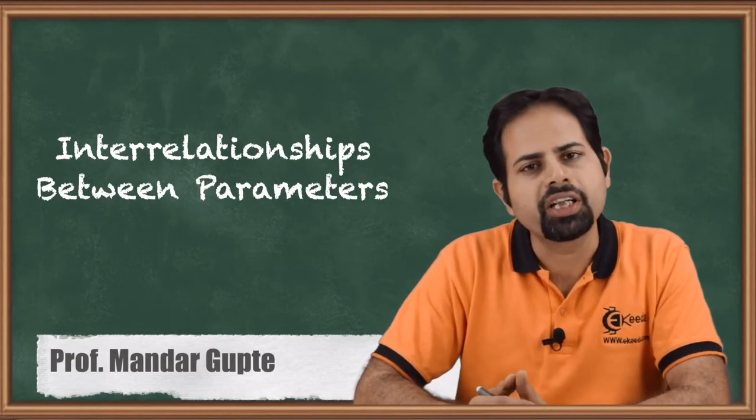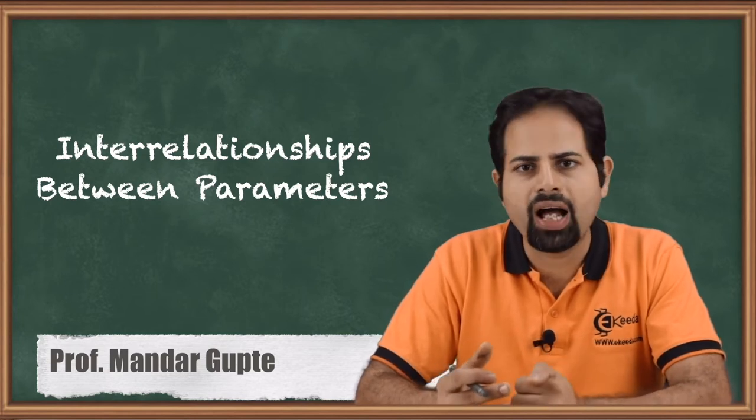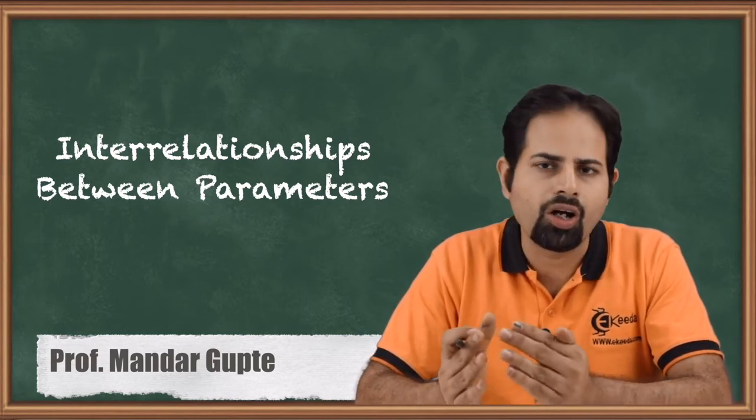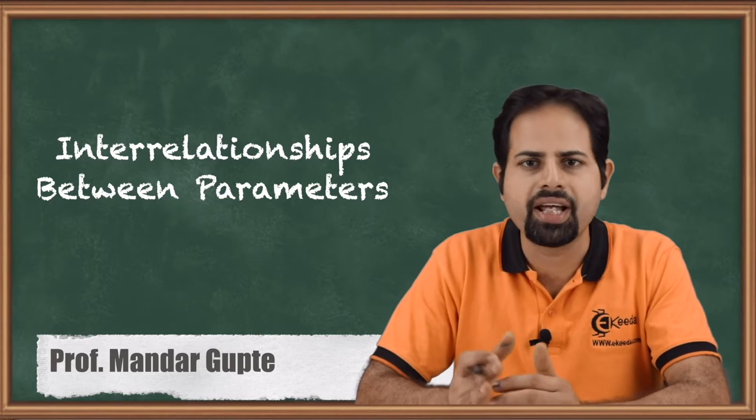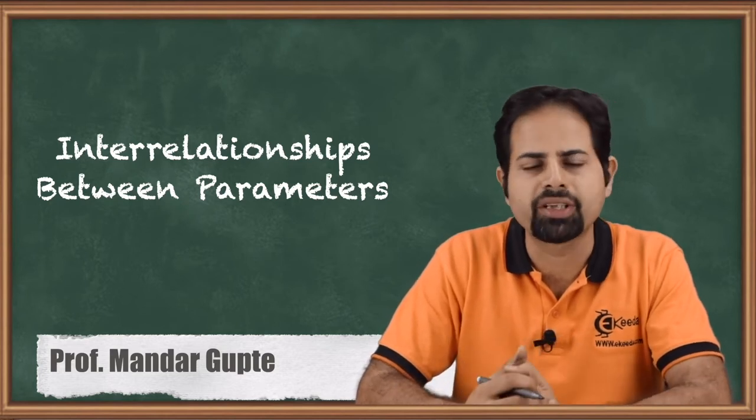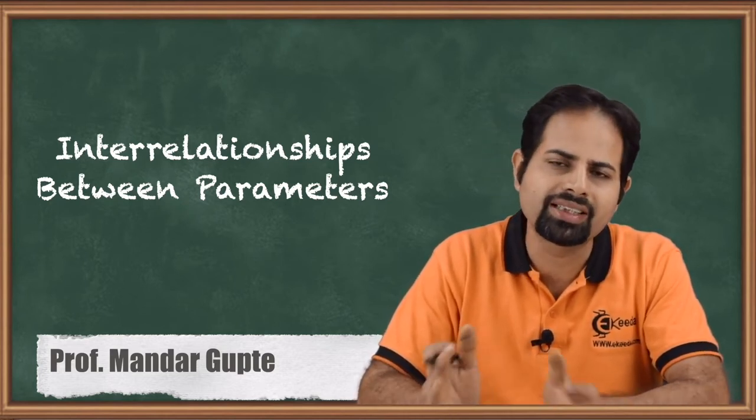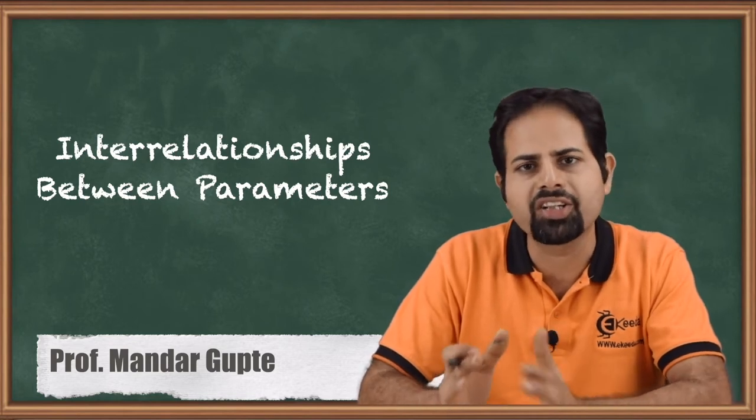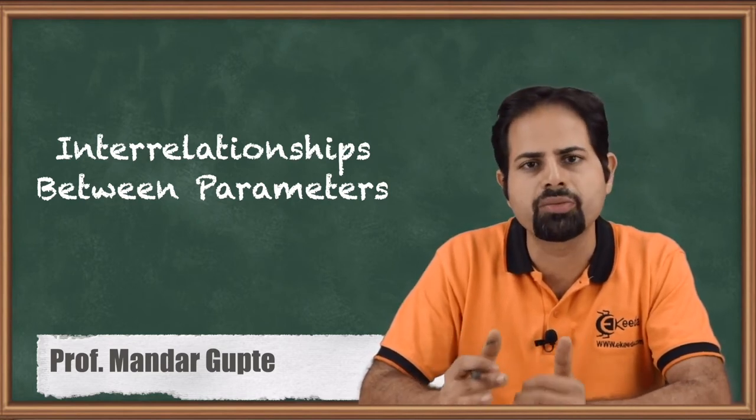Today we will see what is the connection between Z, Y, H or G as well as T, T' - all these six parameters that we have seen for two-port networks, these six combinations. What is the connection between them or what is the relation between them?